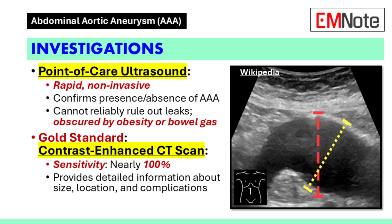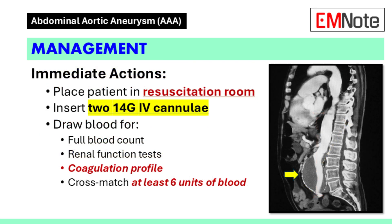Investigations. Point-of-care ultrasound is a rapid and non-invasive tool that can confirm the presence or absence of an aortic aneurysm. However, it has limitations — it cannot reliably rule out leaks, and visualization may be obscured by obesity or overlying bowel gas. Contrast-enhanced CT scan is the gold standard imaging modality, with a sensitivity of nearly 100%, providing detailed information about the aneurysm's size, location, and complications such as impending rupture, contained leakage, or frank rupture. Investigations should not delay emergency treatment.